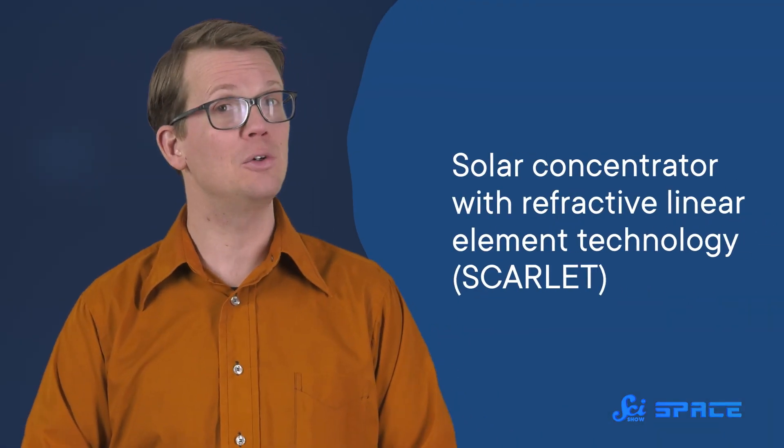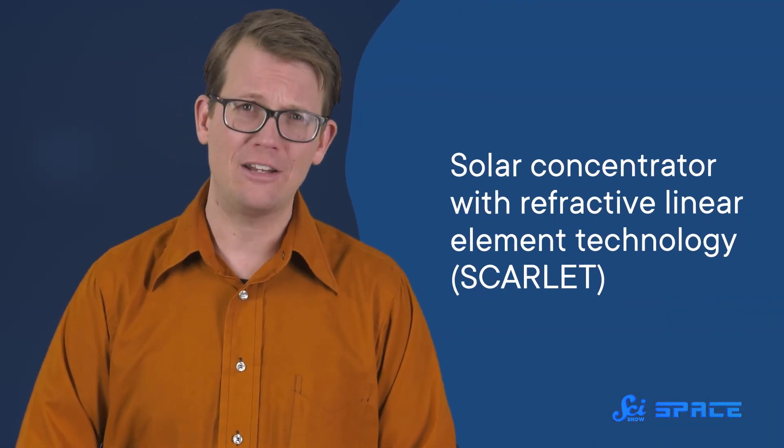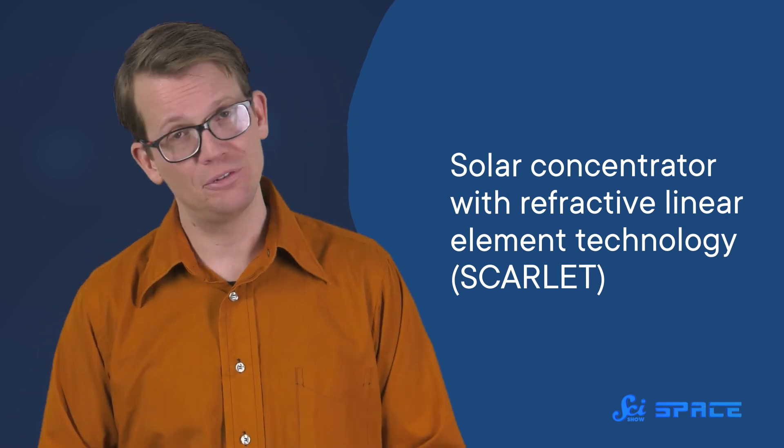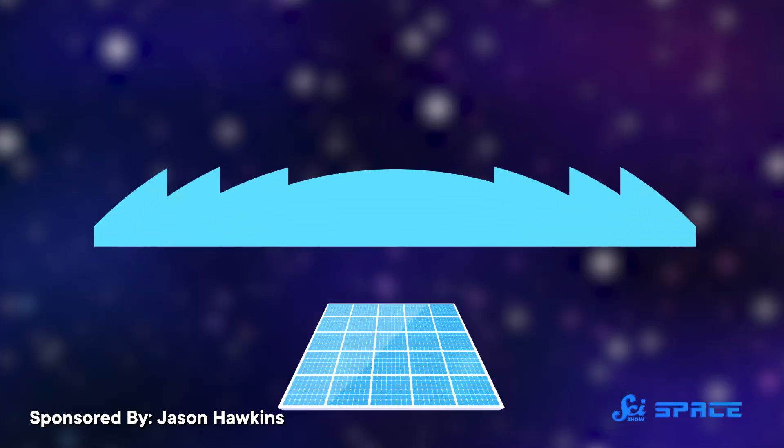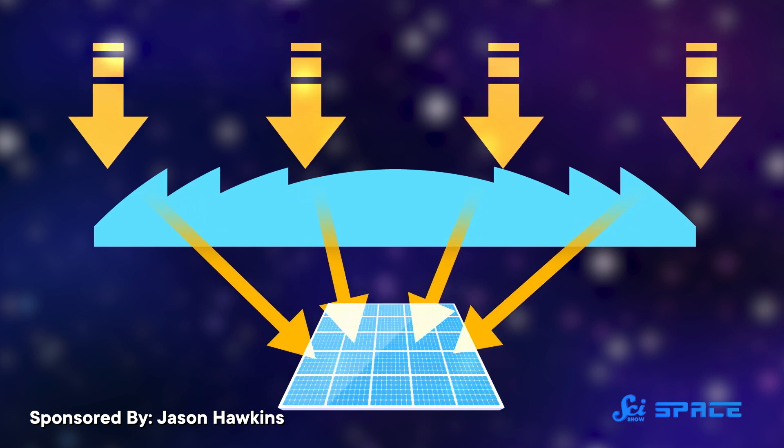So engineers turned to Fresnel lenses to design what they called a solar concentrator with refractive linear element technology, or SCARLET for short. SCARLET was a component that sat above the multi-junction cells, with the sole purpose of concentrating the sun's light.